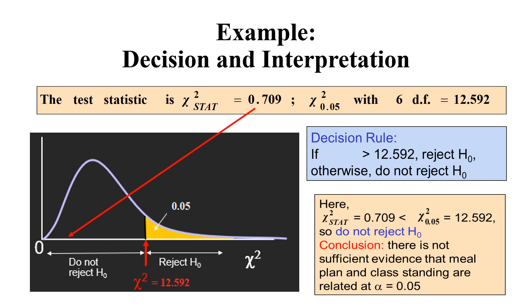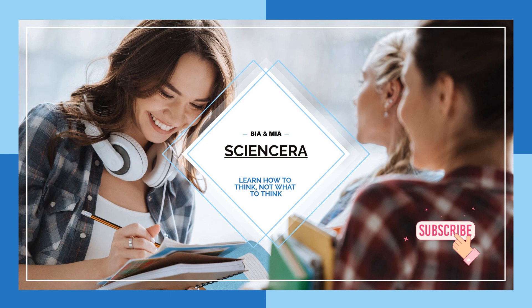Now we make the decision. The decision rule states that if the test statistic is greater than the critical value, we reject the null hypothesis. Since 0.709 is less than 12.592 — the critical value at 6 degrees of freedom and significance level 0.05 — we do not reject the null hypothesis. The conclusion is that there is not sufficient evidence that meal plan and class standing are related at α = 0.05.